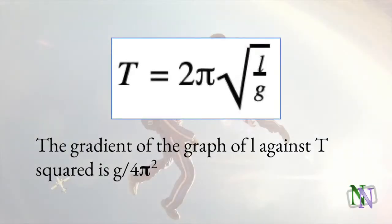Other equations, such as the time period of a pendulum, include small g as a constant and you can plot a graph of length against time period squared and use its gradient to calculate g. Can you see why the gradient would be g divided by 4π²? You could pause the video here to check that you understand the statement.